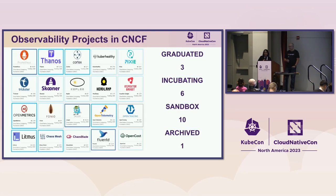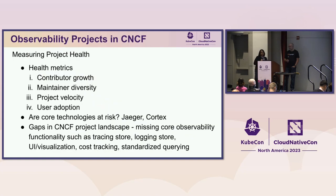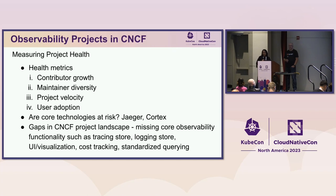A couple of other increasingly prominent areas are cost tracking — there is one project called OpenCost in the CNCF space, but we need more. There is room for a lot more innovation and improvement in cost tracking, as well as standardized querying. Some work is happening in the query specification space in one of our working groups, but there's room for other areas to be added to the CNCF observability project space.